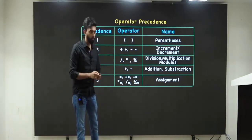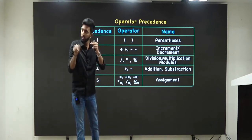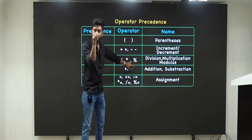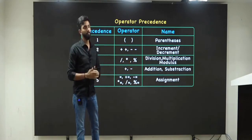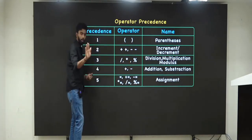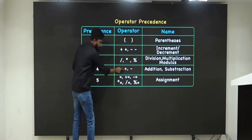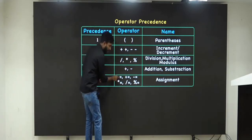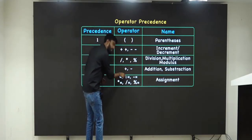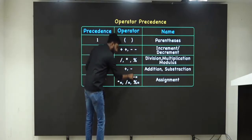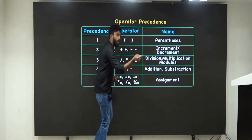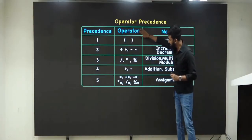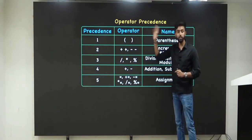For example, if I divide 12 by 2, the quotient is 6 and the remainder is 0. If you want 6, you use slash; if you want 0, you use percentage. We will see all this in depth. After that, addition and subtraction, and finally assignment. Plus-equal-to, minus-equal-to, star-equal-to, slash-equal-to, and percentage-equal-to are also assignment operators. Keeping this table in mind, let us solve some questions.